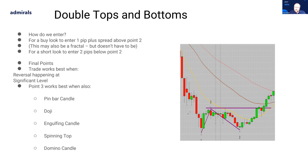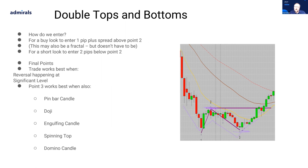Once you've identified a double bottom, a break of Point 2 is your entry and your stop loss goes beneath Point 3 — that's the general rule. The double top and double bottom isn't necessarily a mechanical pattern to identify, but the way you trade it should be mechanical: buy the break of Point 2, stop loss on the other side of Point 3. You know where your entry is, where you're wrong, and how far the trade could work for you.